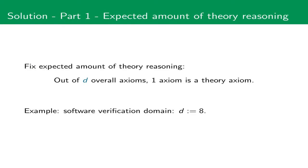Let's now look at each of these parts separately. We first fix the expected amount of theory reasoning by fixing a value d, such that out of all axioms we expect our proofs to have one theory axiom. For instance, on our domain of software verification, we often choose a d which is 8.